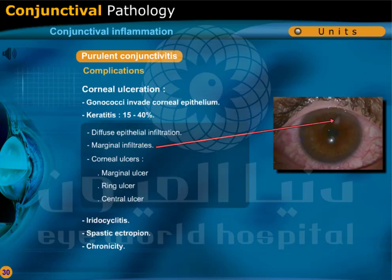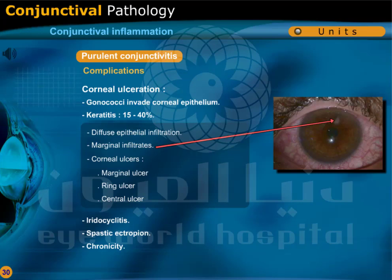Purulent conjunctivitis may be complicated by corneal ulcerations, where gonococci invade the corneal epithelium. Keratitis occurs in 15-40% of cases. There is diffuse epithelial infiltration, marginal infiltrates and corneal ulcers — marginal ulcer, ring ulcer, or central ulcer. Other complications include iridocyclitis, spastic ectropion, and chronicity.